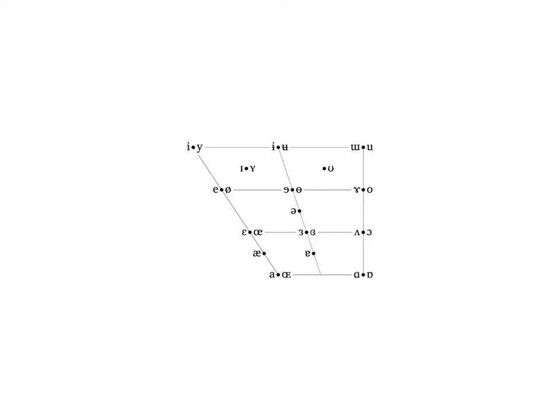The third and final symbol that we'll discuss that differs somewhat from how we used it for general North American English versus its official IPA definition is the symbol ash. In the IPA, this symbol represents a near-low vowel, halfway between cardinal vowels 3 and 4. For general North American English, we use this to represent what we called a low vowel, but in fact that vowel ranges in pronunciation from low up to mid, depending on the speaker, their dialect, and the position in which the vowel is pronounced.